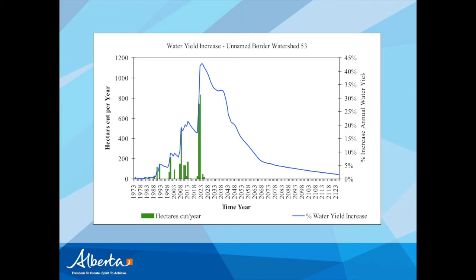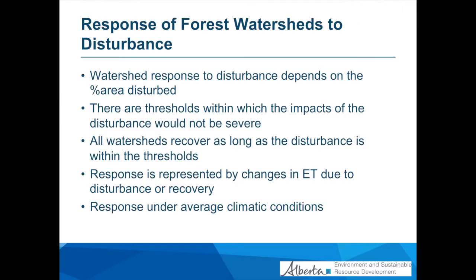This gives another perspective of the same process. The green bars represent harvests at certain times in the planning horizon. When you harvest, the blue line — called water yield, which is essentially runoff at the outlet of the watershed — increases. If the next harvest occurs before runoff has recovered to the pre-harvest stage, it increases further until the last harvest, after which runoff recovers back to the pre-disturbance condition. We want to be able to capture these changes in our procedure.